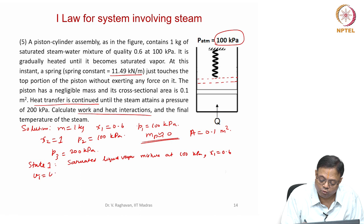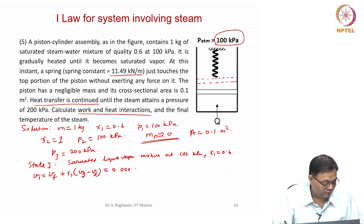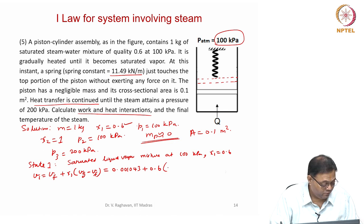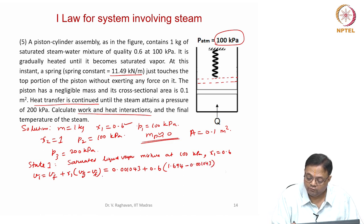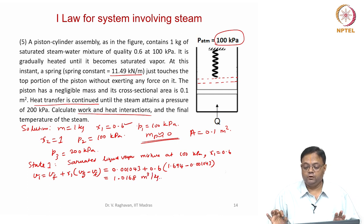V1 equals Vf plus x1 times (Vg minus Vf), which equals 0.001043 plus 0.6 times (1.694 minus 0.001043). That gives V1 as 1.0168 meter cube per kg. That is the state 1 specific volume.